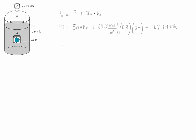The pressure at the bottom can be calculated either from the pressure of the surface or from the pressure at the top. I'm going to calculate it as p plus gamma of oil, then multiply by h1 plus h2, where h2 is the additional depth to the bottom of the plate.